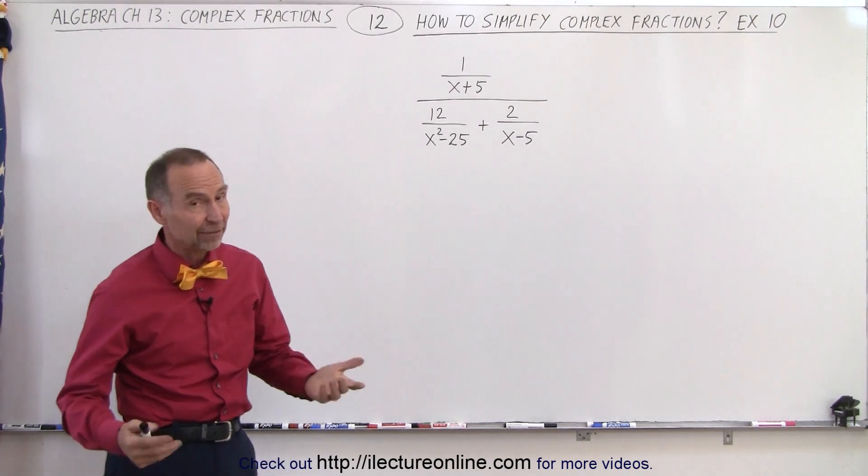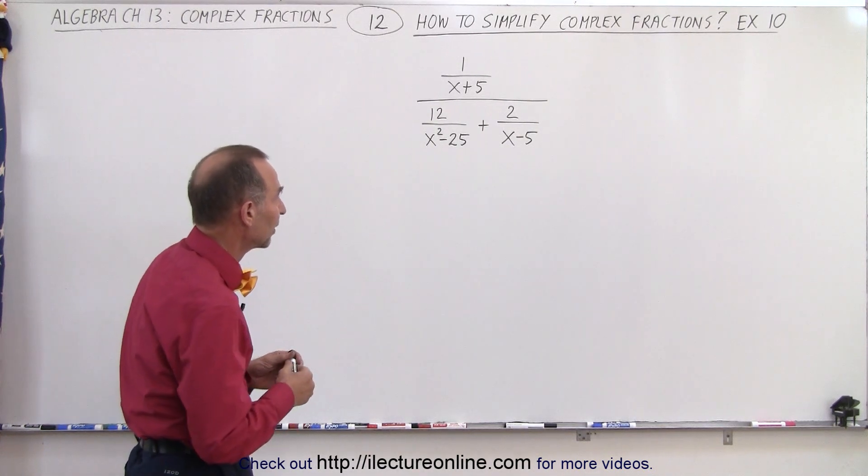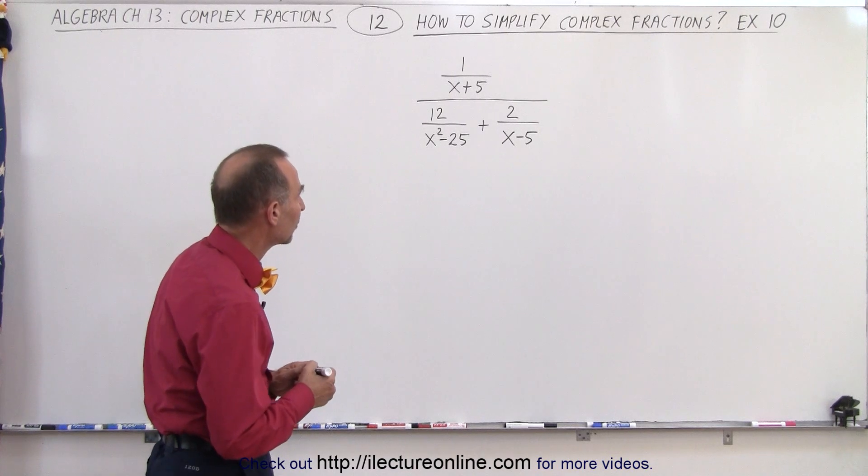Matter of fact, x squared minus 25, that's the difference of squares. We're going to first factor it out to see what our lowest common denominator needs to be.